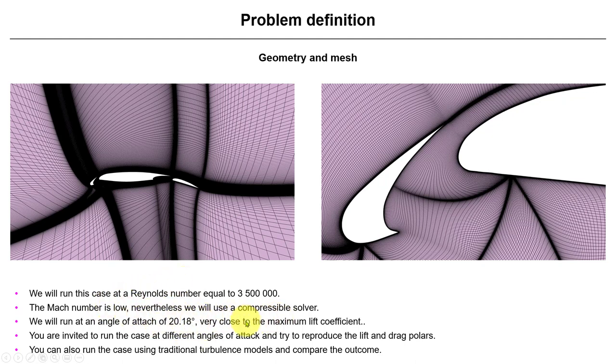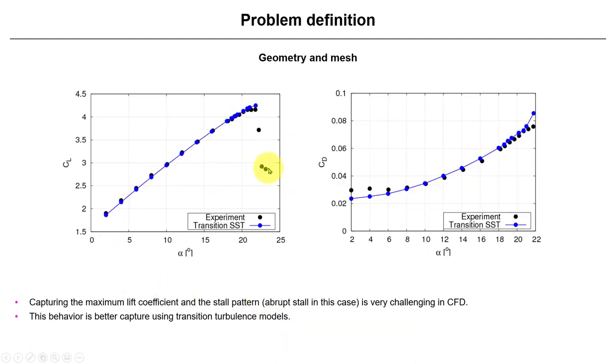I invite you after seeing this case running to rerun at different angles of attack and try to reproduce the physical behavior. You have the references there, but I'm also attaching a file with different angles of attack and CL/CD. So basically this is what we have—using the transition SST, this behavior, and then the experiments.